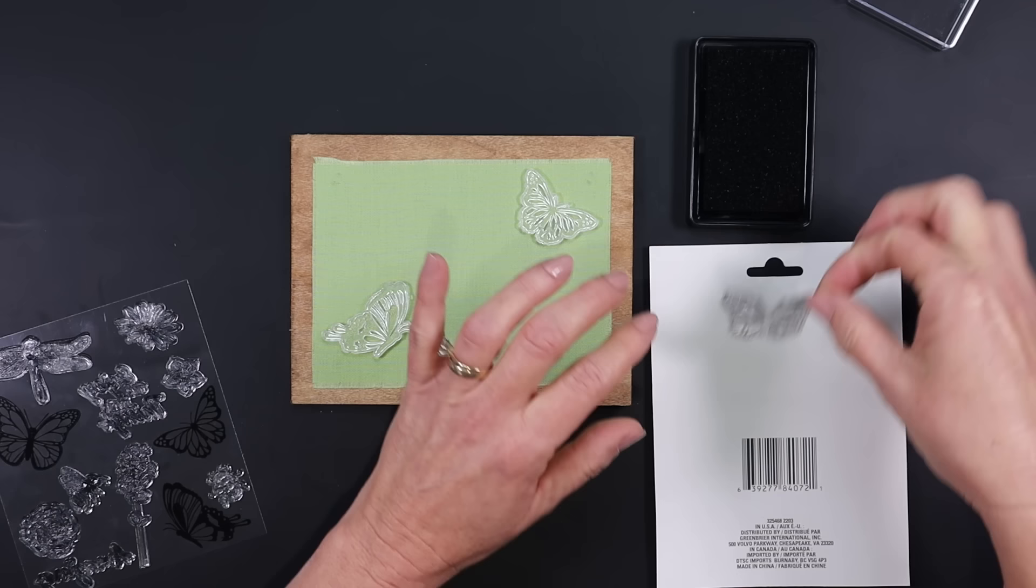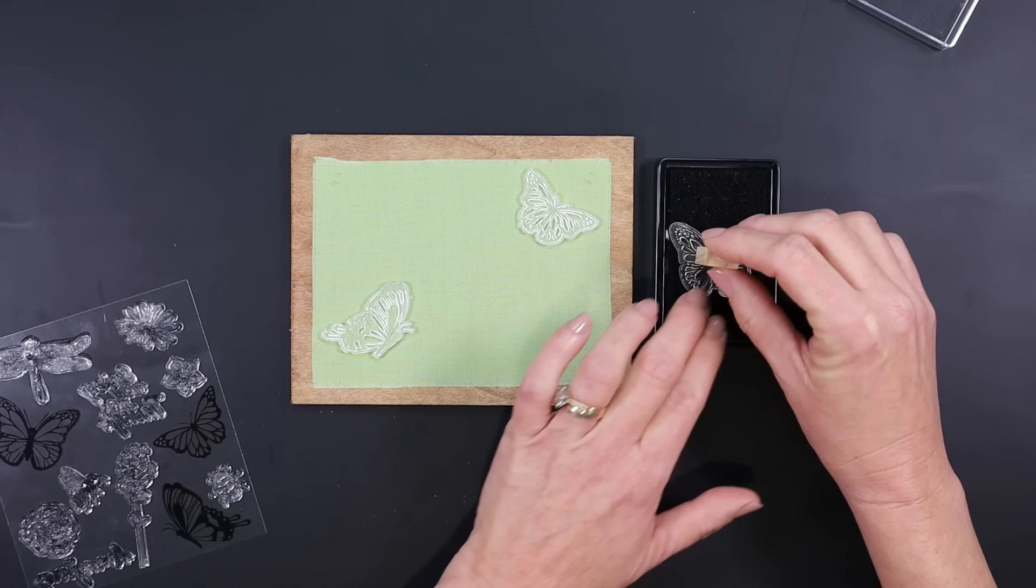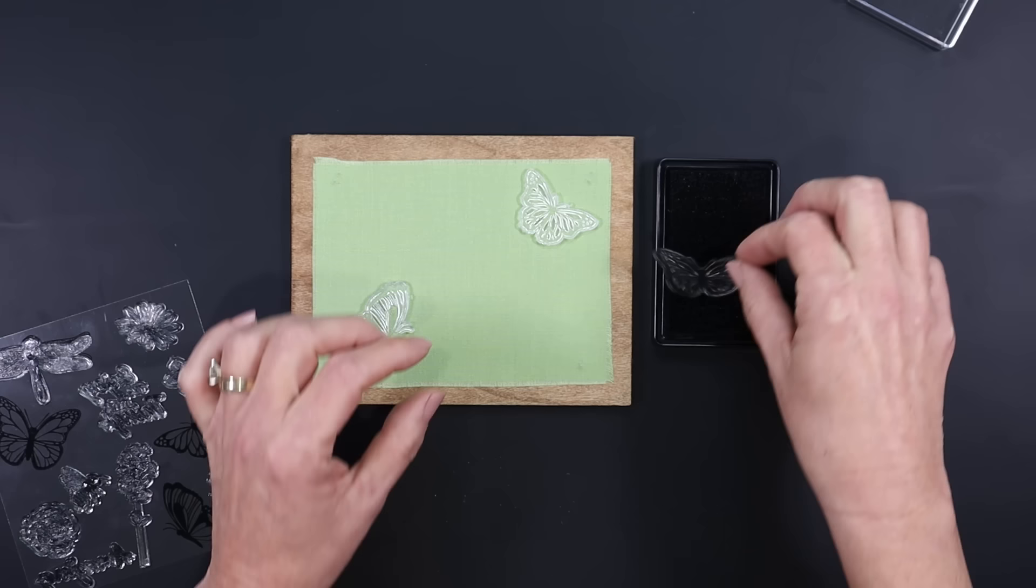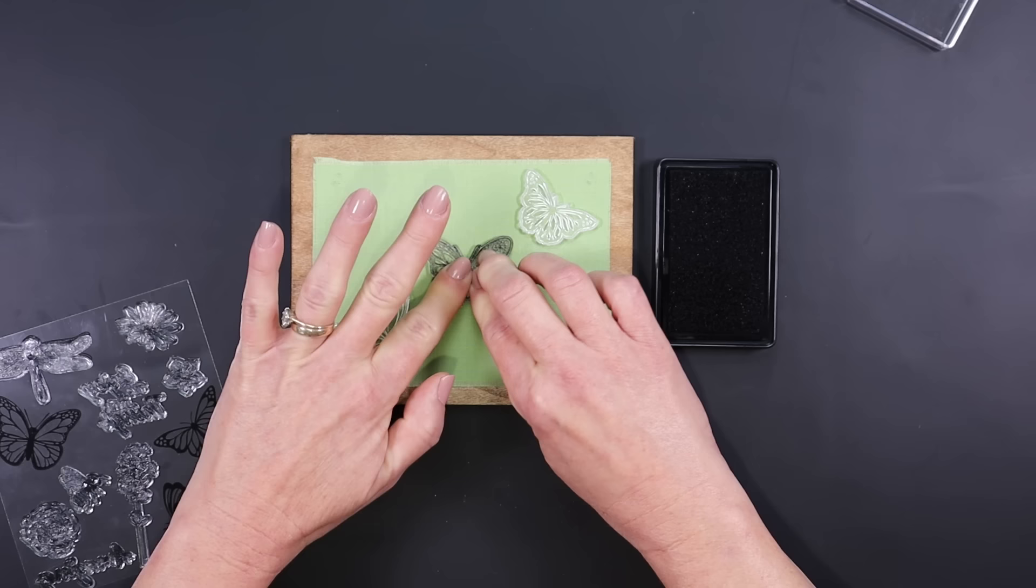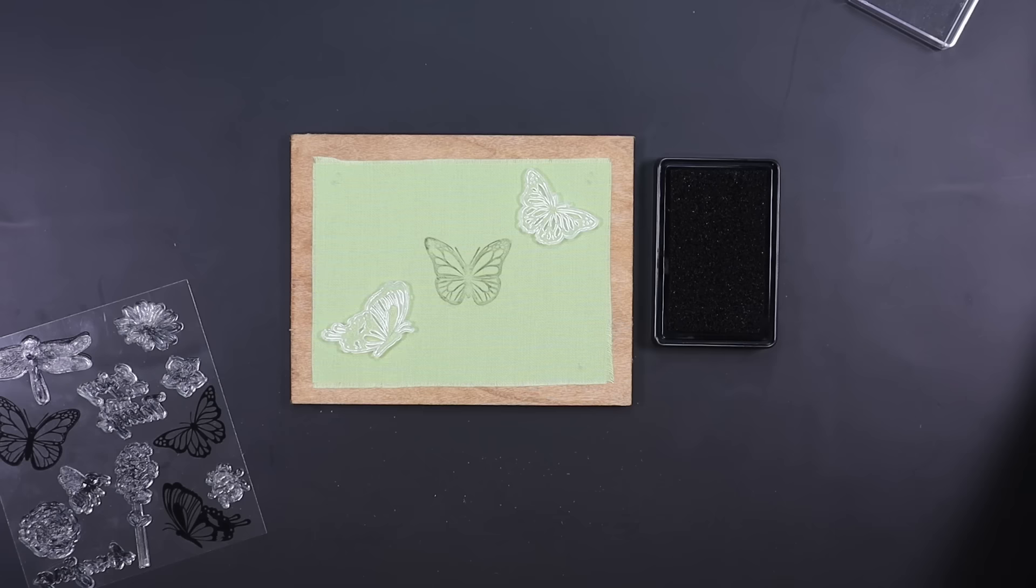To make sure I was able to get all of the outside edges, I used a tumbling tower piece to push that down into the ink pad. That just kept the ink from getting all over my fingertips. After you've pressed it down onto your fabric, to keep it from smudging, you'll want to pull it straight up, and then I'm going to continue to do that for the other two butterflies, adding them to this fabric.